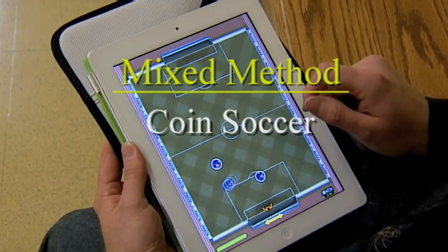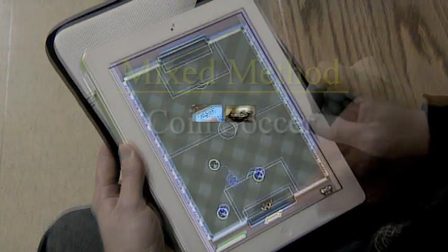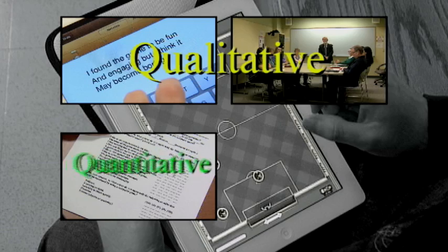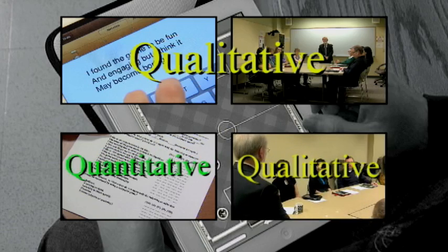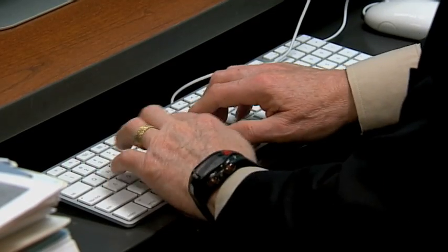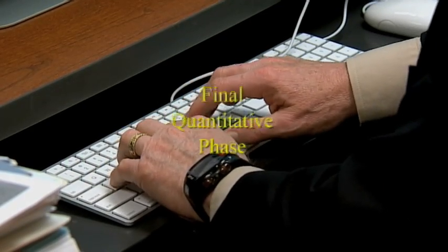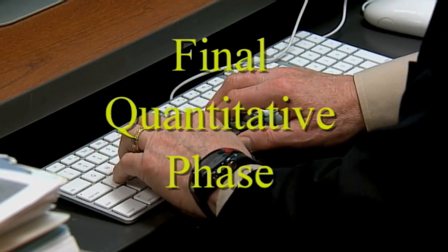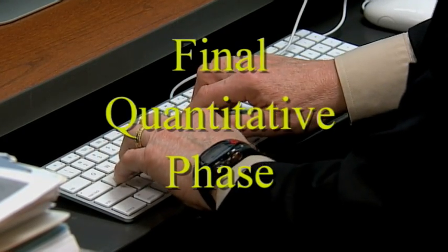So let's summarize this mixed methods approach. Two qualitative phases — a journal and a focus group — led to a pilot survey, a quantitative measure, which the focus group evaluated. A revised survey, the final quantitative phase, will now be given to a larger population.